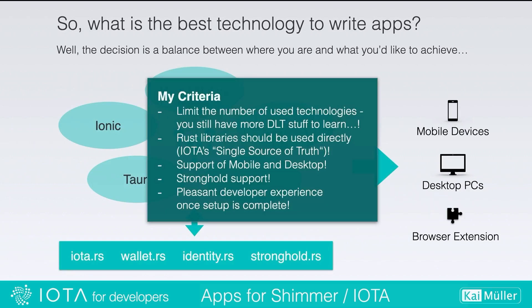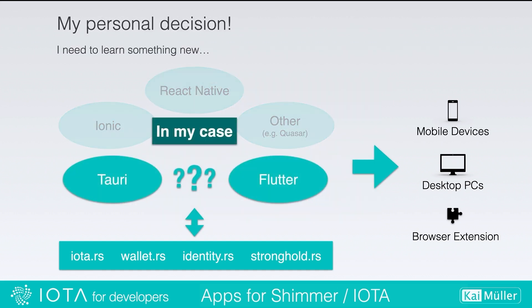The question was: what do I want to achieve? I want a pleasant developer experience with a limited number of technologies, I want to use the Rust libraries directly, I want to support both mobile and desktop, and I want a secure technology using Stronghold in the background. My first conclusion was that I wanted a deeper look into Tauri and Flutter.